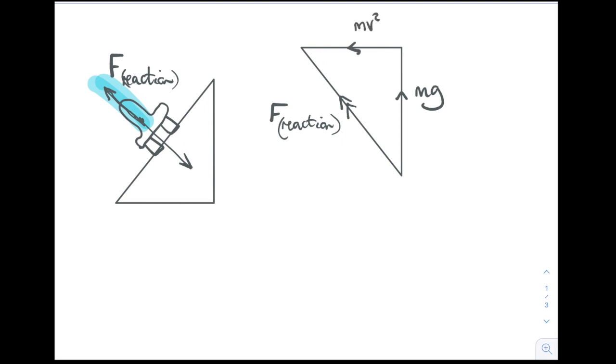The horizontal component is the force that the road is pushing the car into the center of the circle with—that's the centripetal force. And the angle of the bank is that angle theta in this triangle.